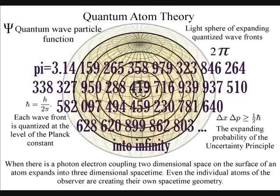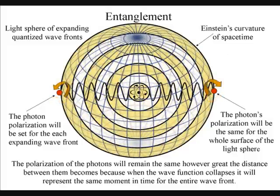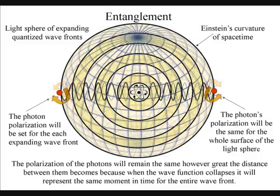The polarization of the light will be the same for the entire surface of the light sphere, creating quantum entanglement and the symmetry and geometry of space-time.